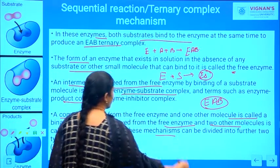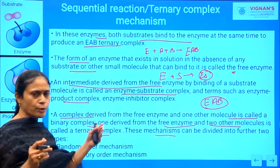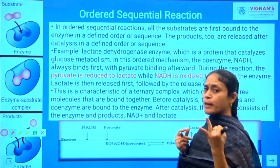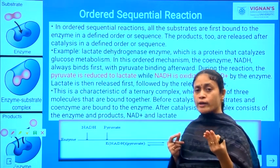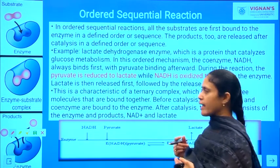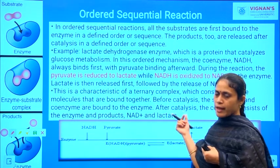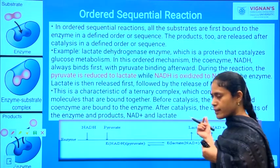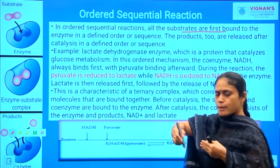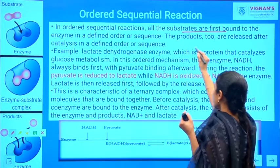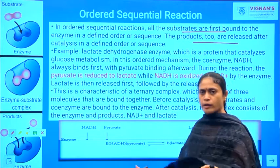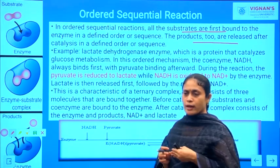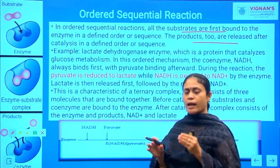There are two types of mechanisms in the sequential mechanism: random ordered mechanism and compulsory ordered mechanism. In the ordered sequential reaction, all the substrates bind to the enzyme in a proper order and sequence. Similarly, the products are also released from the enzyme in a sequence or in an order — substrate addition and product release both take place in a sequential and orderly way.